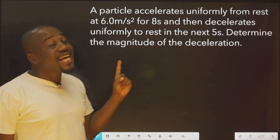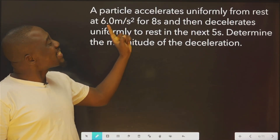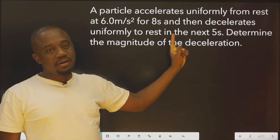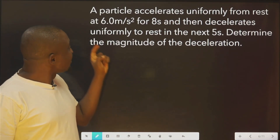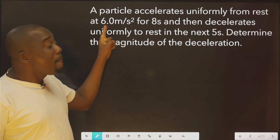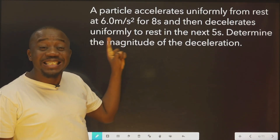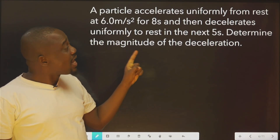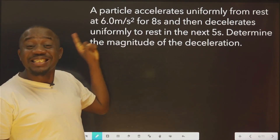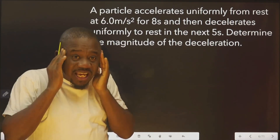Let's look at this question. It says, a particle accelerates uniformly from rest at 6.0 meter per second squared for 8 seconds. As you can see, this is acceleration in meter per second squared.